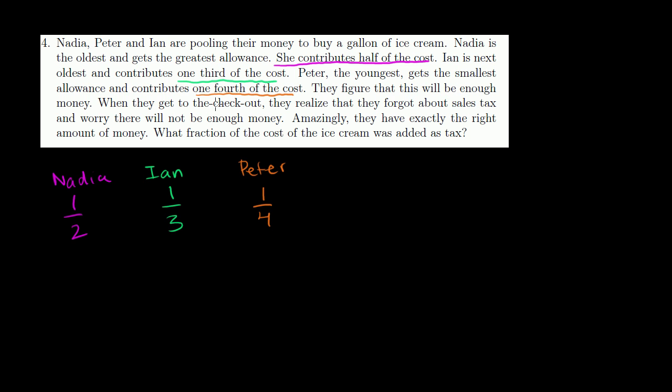They figure that this will be enough money. When they get to the checkout, they realize that they forgot about sales tax and worry there will not be enough money. Amazingly, they have exactly the right amount of money. What fraction of the cost of ice cream was added as tax? Well, let's see. If we add 1/2 plus 1/3 plus 1/4 of the cost, let's see what we get. So we have to find a common denominator, some number that is the least common multiple of 2, 3, and 4. And let's see, 4 would have to be 12, right? 12 is divisible by 2, is divisible by 3, and is divisible by 4.